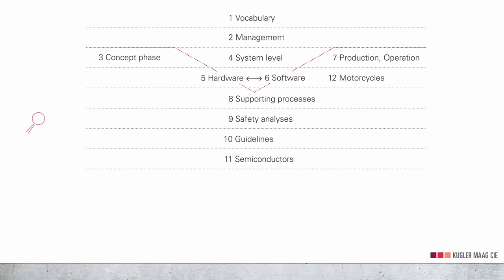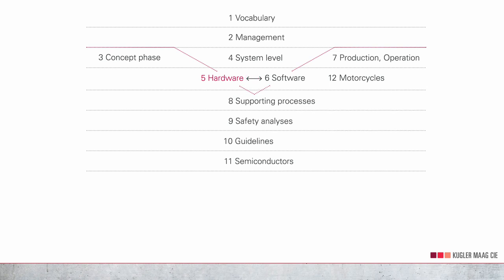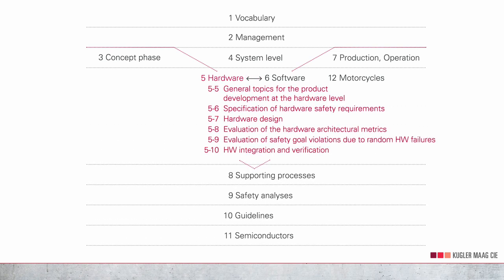Part 5 of ISO 26262 contains the requirements specific for the automotive market. This graphic shows how hardware development is embedded in the overview of ISO 26262. In the following minutes, I will explain what you have to do in addition to or differently in the individual phases of hardware development, showing you six key lessons.